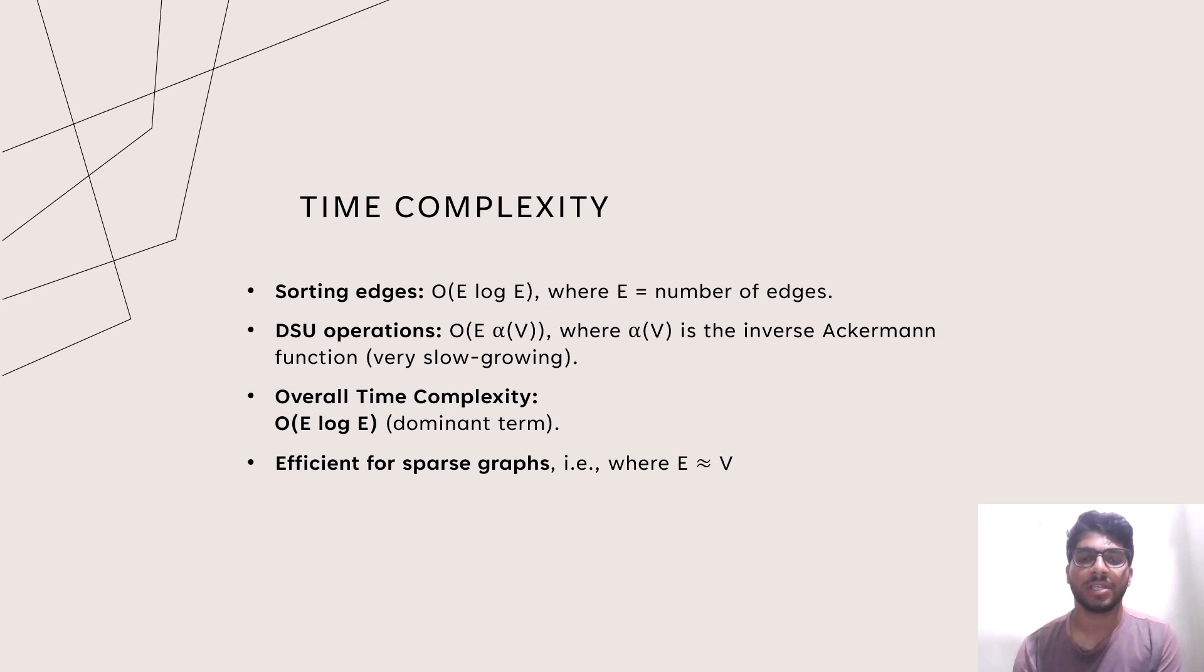DSU operations: O(E alpha(V)) where alpha(V) is the inverse Ackermann function. Overall time complexity: O(E log E) which is the dominant term. It is also efficient for sparse graphs where E is approximately equal to V.